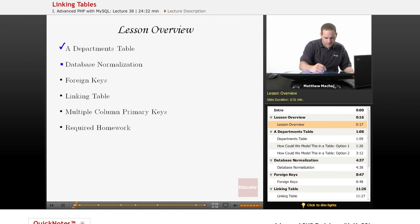As part of that discussion, we're going to be talking about a concept called database normalization, which is a way to basically make your database work and act more efficiently. One of the topics related to that is something known as foreign keys. Then we're going to talk about what a linking table is, and also how you can have a table with a primary key that's comprised of multiple columns.